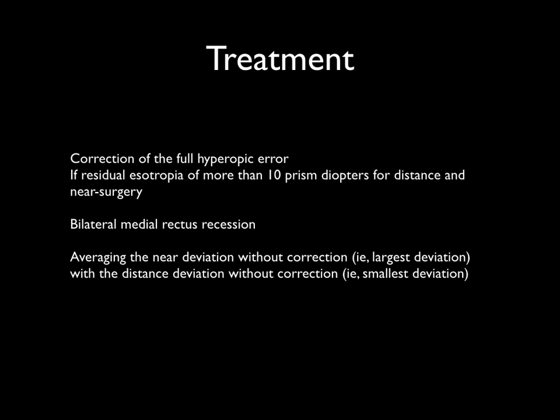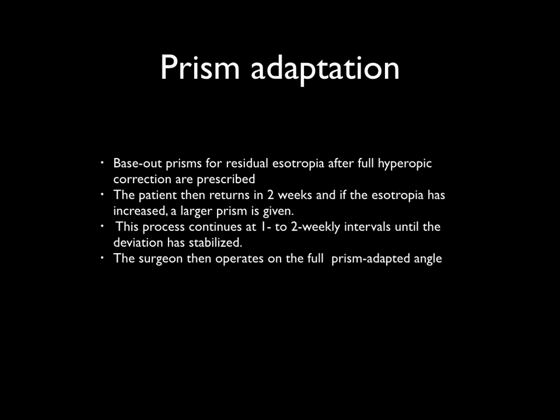The child will still need to wear glasses after surgery. For children with high AC/A ratio and partially accommodative esotropia, the most acceptable technique is to average the near deviation without correction with the distance deviation without correction, and correct that average. Another method is prism adaptation, in which a base-out prism for the residual esotropia is given after full cycloplegic correction. The child is reviewed every two weeks; if the esotropia has increased, a larger prism is given. This continues until the deviation stabilizes, and the surgeon then operates on the full prism-adapted angle. The success rate of this method is said to be around 85%.